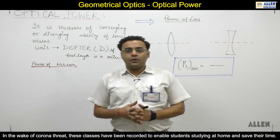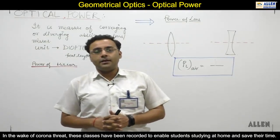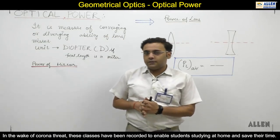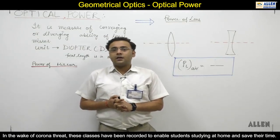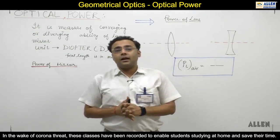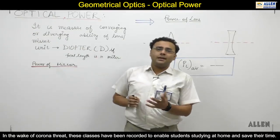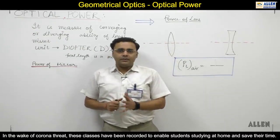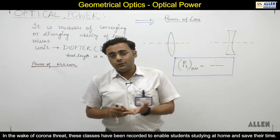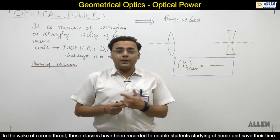Now we are moving to the next topic of lens, that is optical power. Optical power's definition is it measures the converging or diverging ability of an instrument, lens, or mirror - anything. Whether how fast it will converge or diverge.